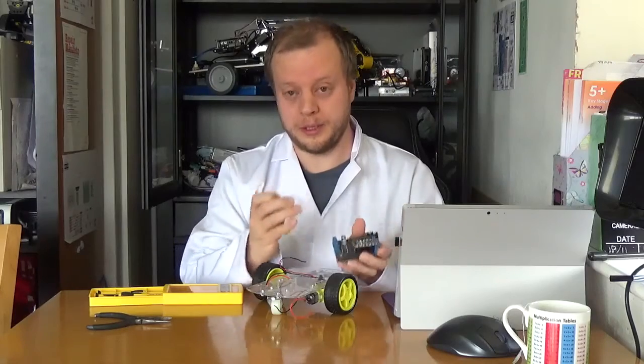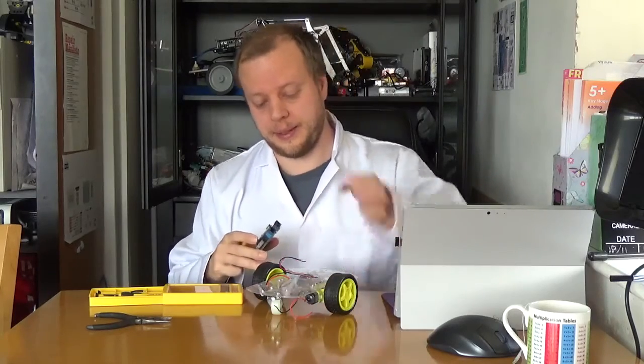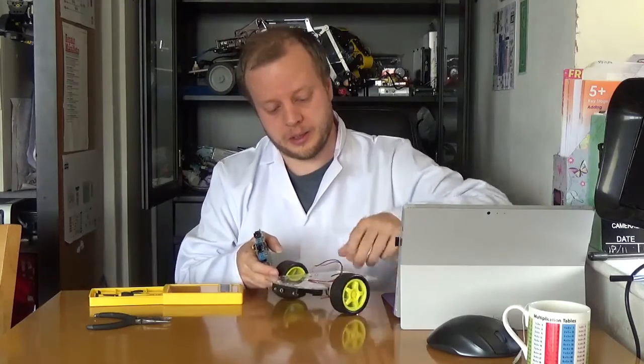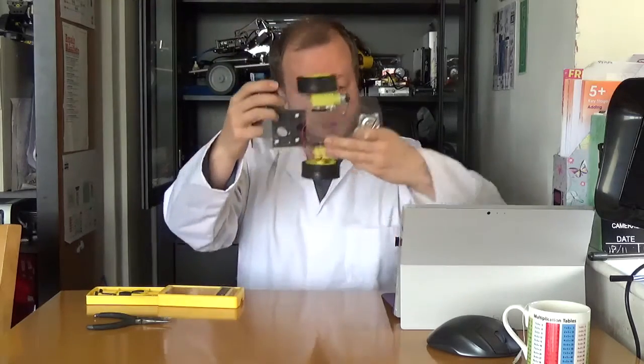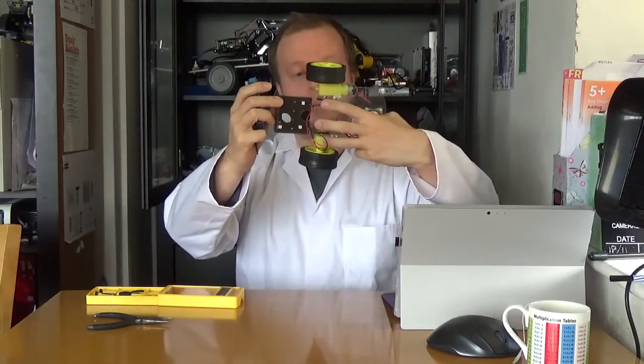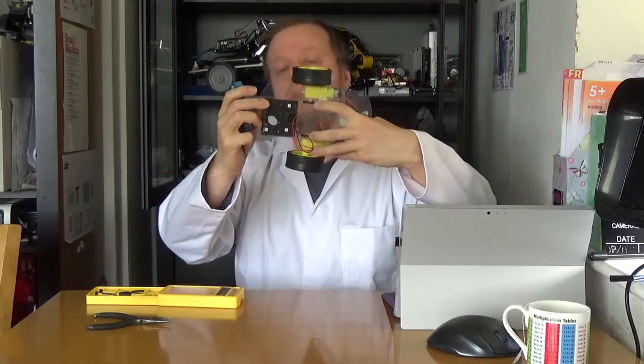This two wheel platform is interesting in that as well as having a caster wheel on the bottom, it's got a space here for some opto interruptors. What that means is I can actually count how far the wheels have gone.